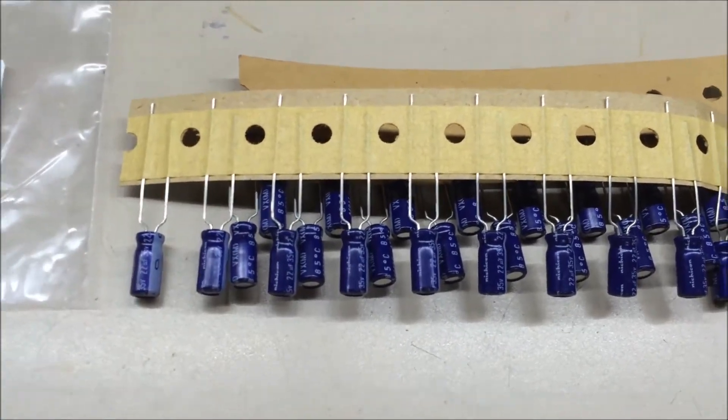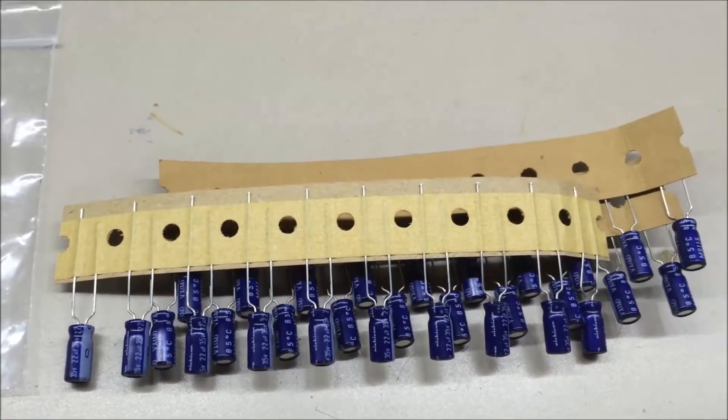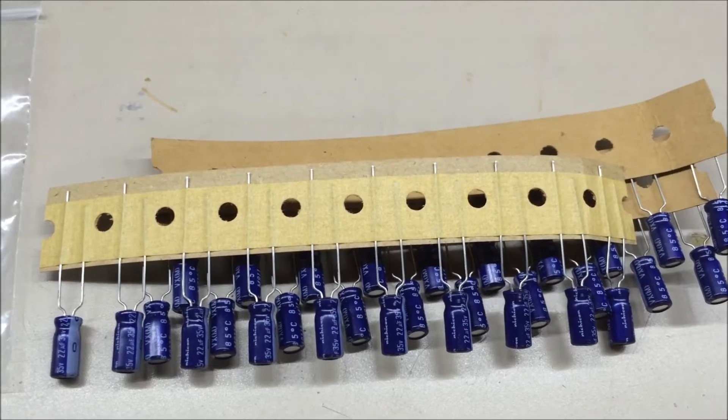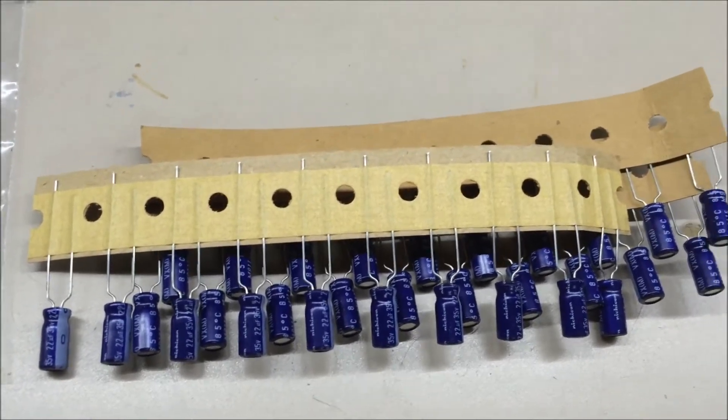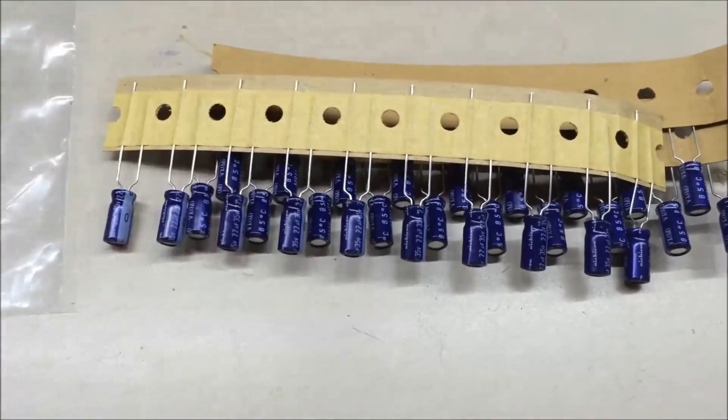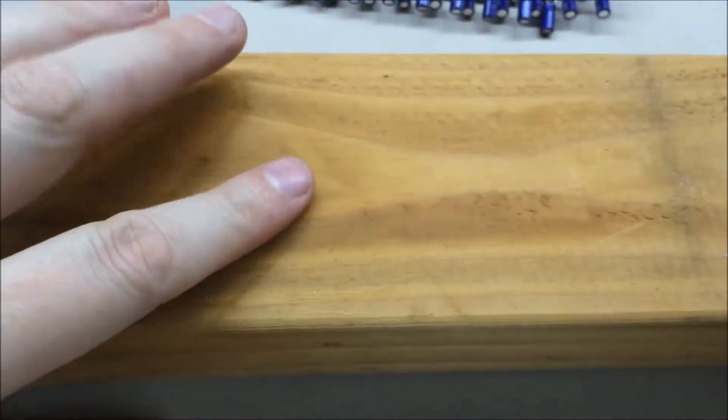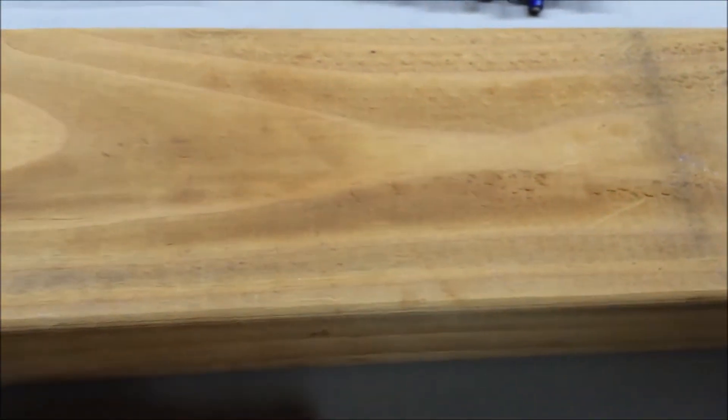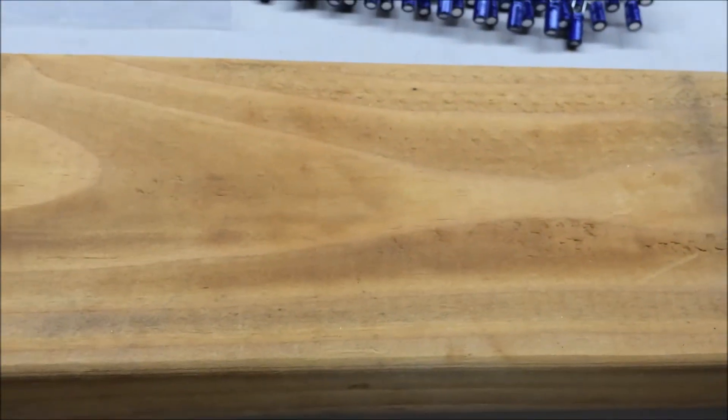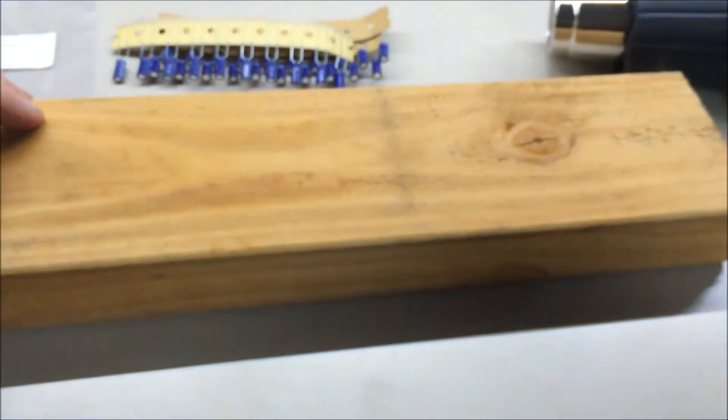So I thought I'd just make a quick video today and show you how to do that. What you need is of course the capacitors on the little strip. You need something that's not going to burn up, so you wouldn't want to do this on your benchtop or Formica top or carpet or anything, so I've just got a two by four laying here that I use and actually keep it under the bench all the time.